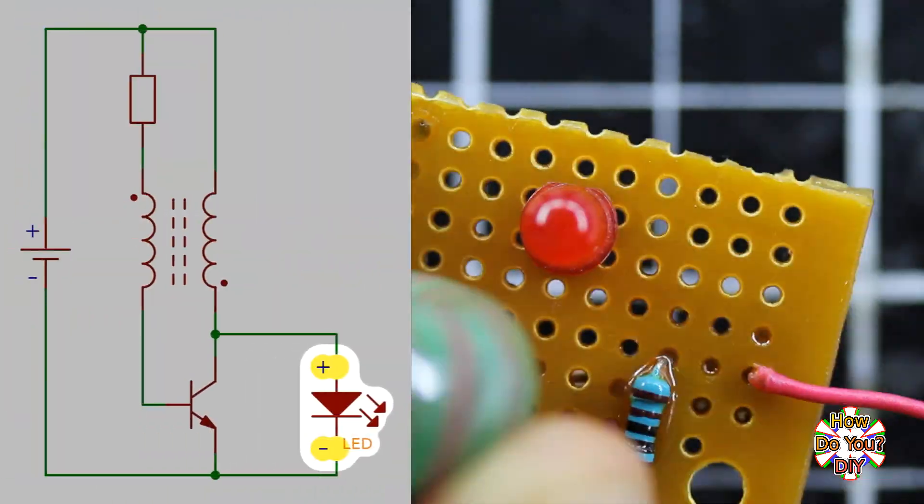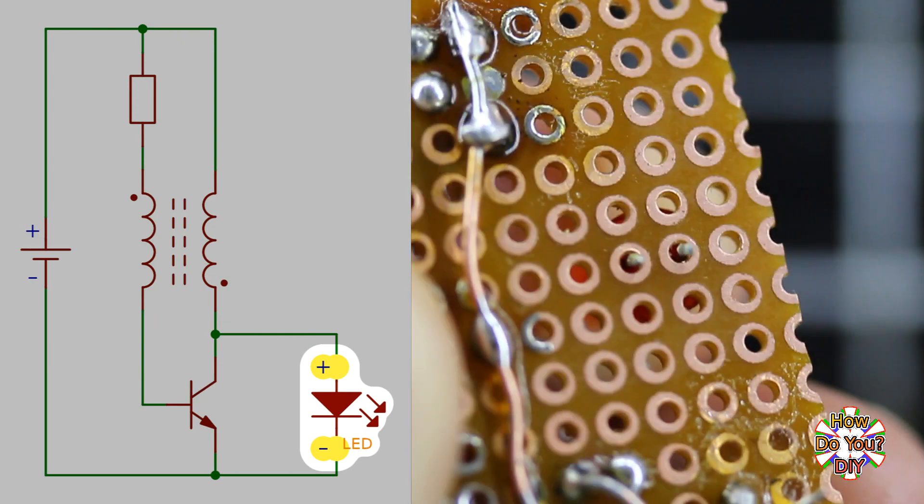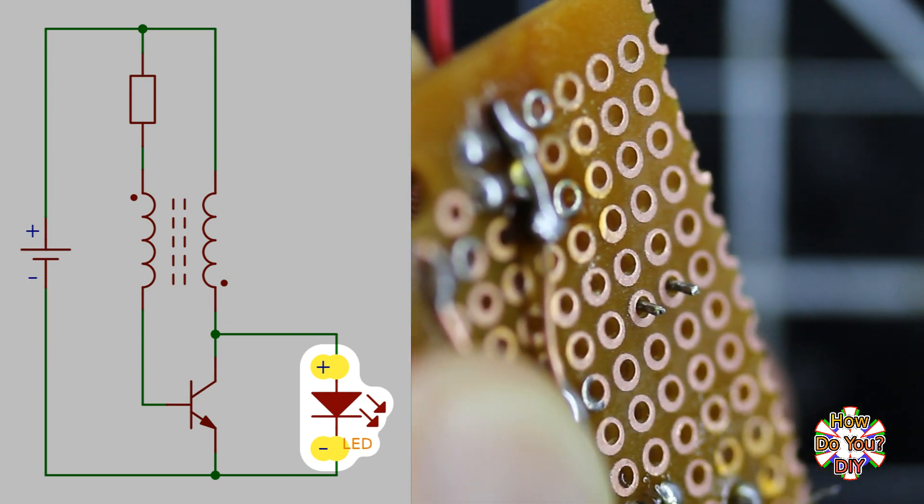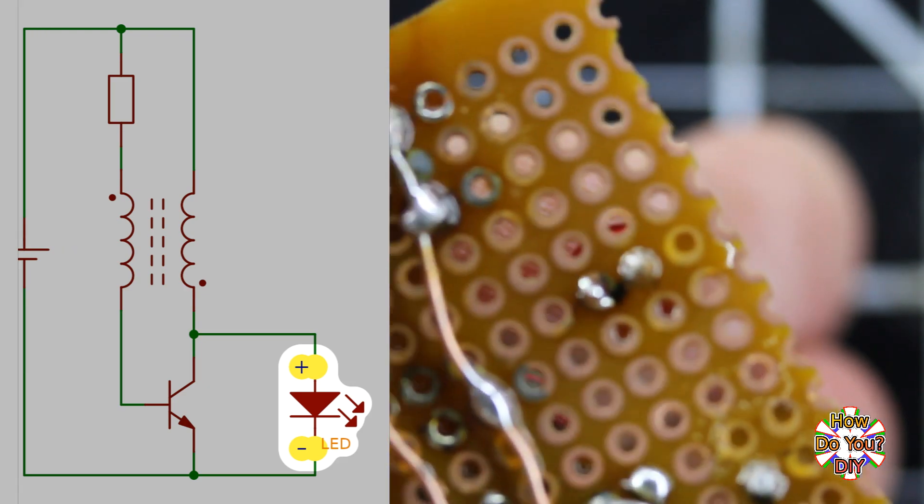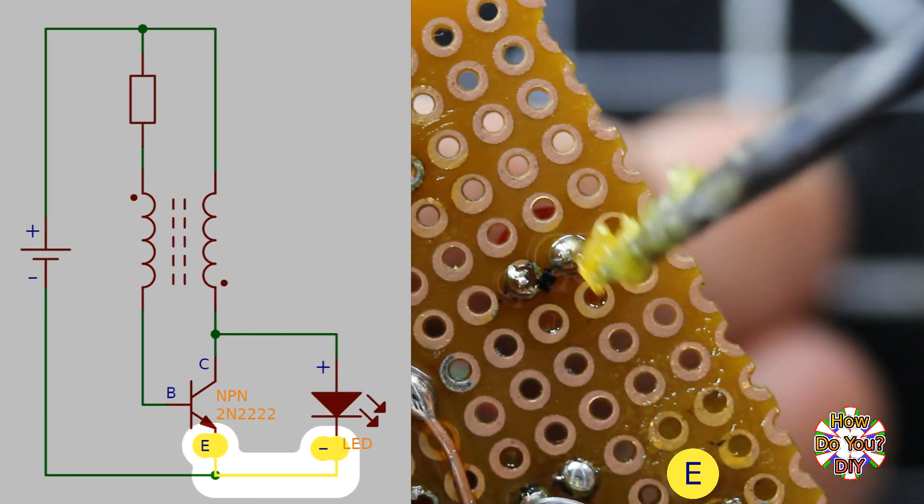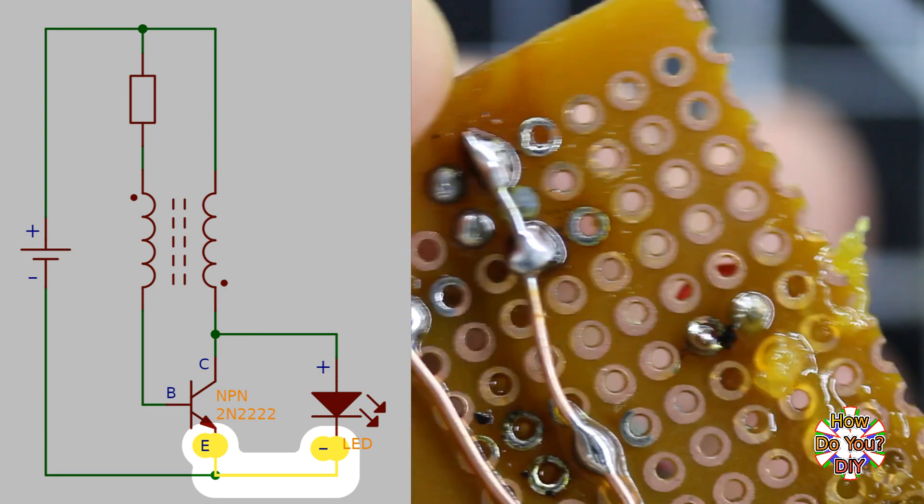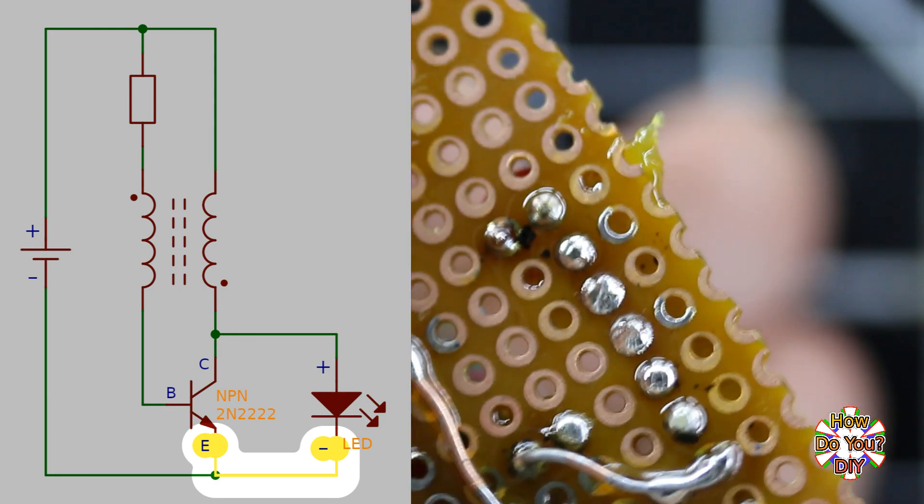The fourth part is the LED. The LED that I'm using is one that I salvaged from another board, so the leads are already cut short. The emitter of the transistor will connect to the negative pin of the LED. Since the LED leads are short, I'm going to create a path with solder.